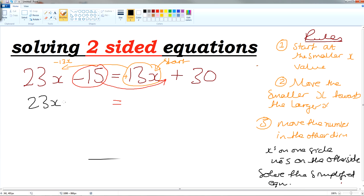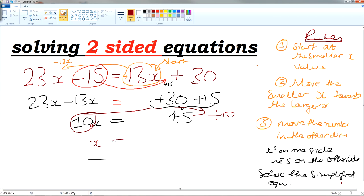So we have 23x minus 13x is equal to plus 30 which is already here. So what happens with minus 15? It goes to a positive. Why does it change positive? Because when we change side we change sign. Let's simplify it now. So what's 30 plus 15? 45. What's 23x minus 13x? 10x. So x has been timed by 10. So the opposite times by 10 is divide by 10. So x is equal to 45 divided by 10 which is equal to 4.5.